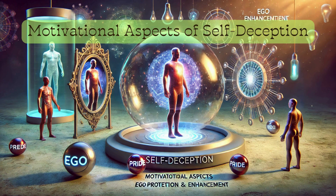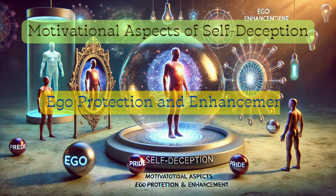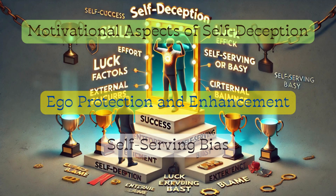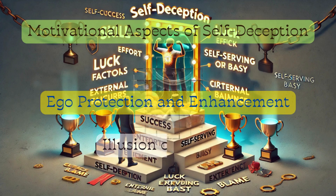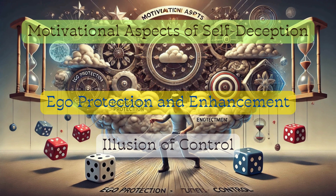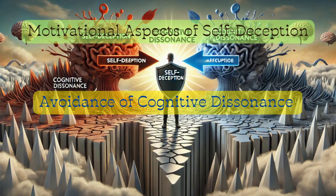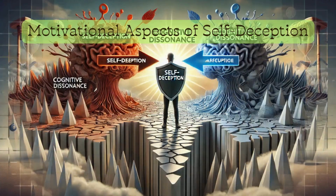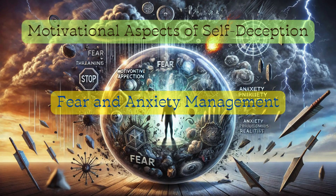Motivational aspects of self-deception include ego protection and enhancement. The self-serving bias involves attributing successes to internal factors and failures to external ones. The illusion of control involves believing one has control over uncontrollable events. Self-deception also serves as a defense mechanism to reconcile conflicting attitudes, beliefs, or behaviors, and suppressing threatening information reduces anxiety and preserves emotional equilibrium.